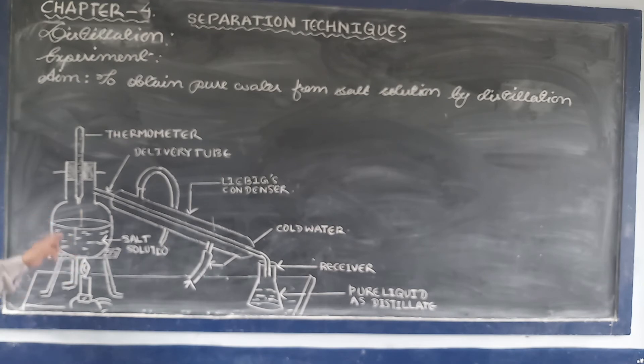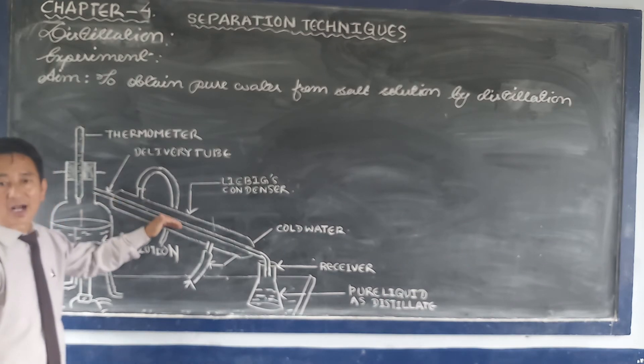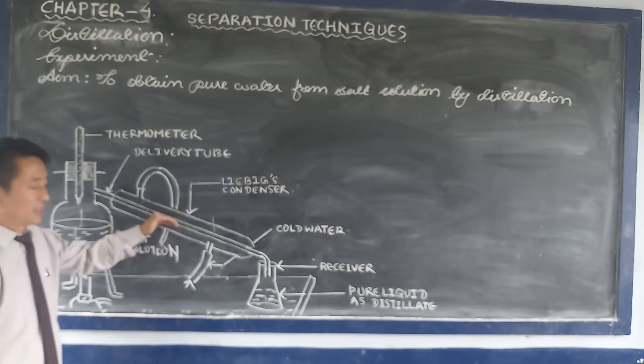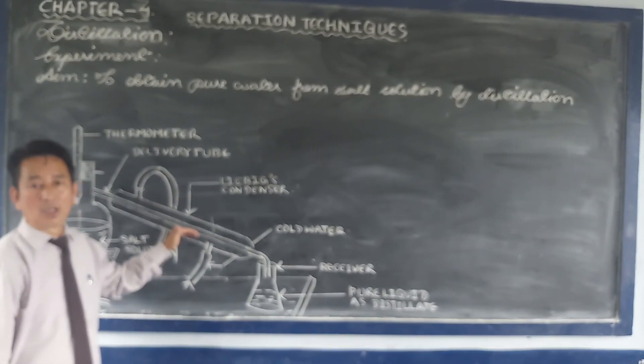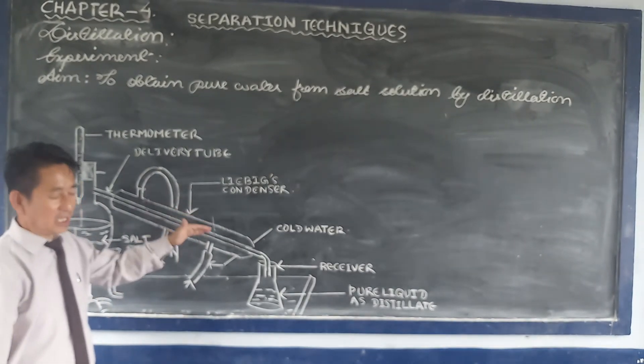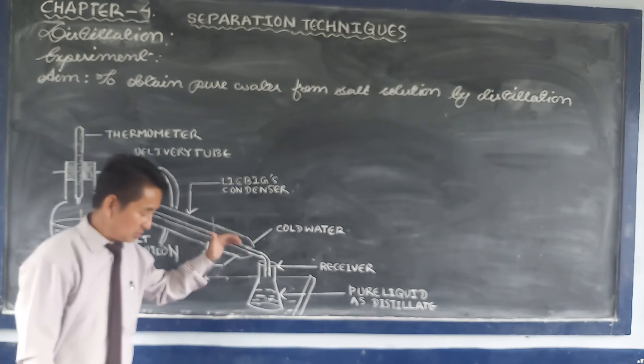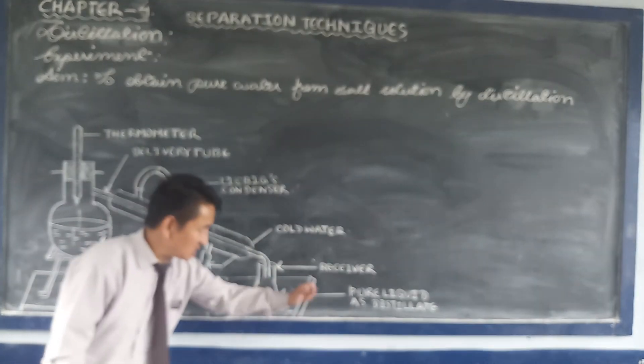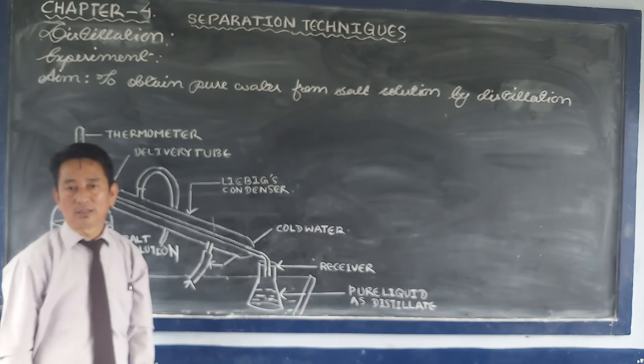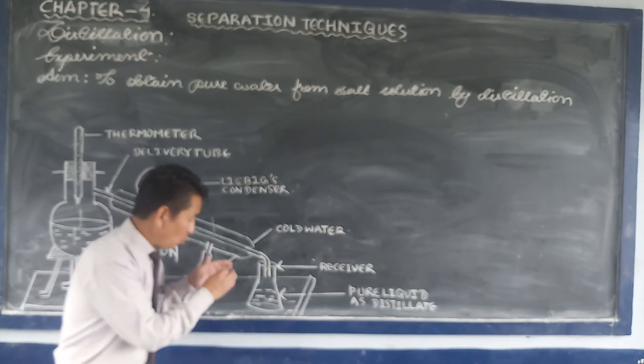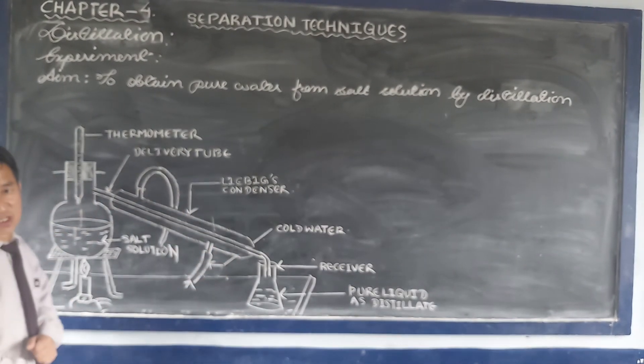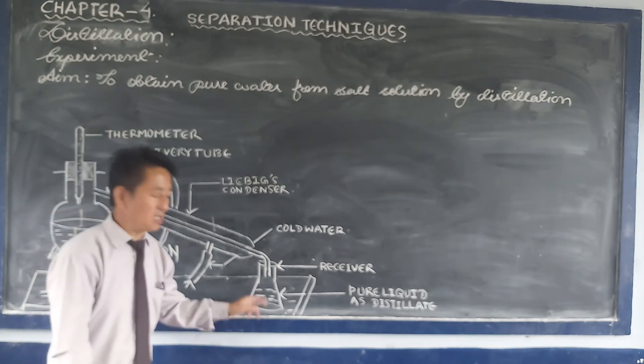On heating the salt solution, the water changes into vapor. This vapor condenses when it passes through the condenser. The vapor changes back into liquid, and this liquid is collected in the receiver as distillate. The water obtained after distillation is known as distilled water.